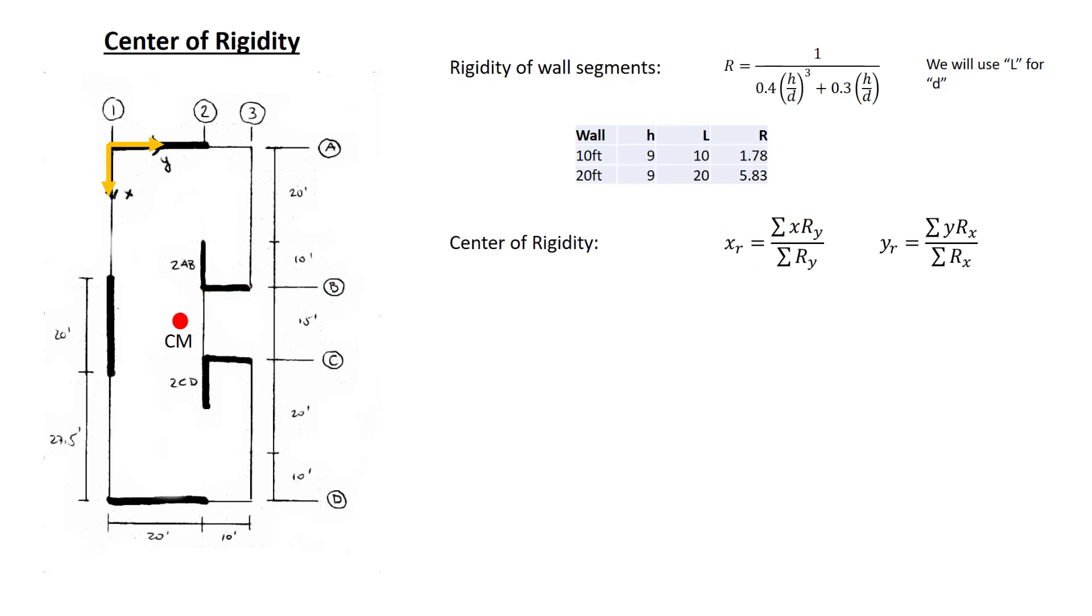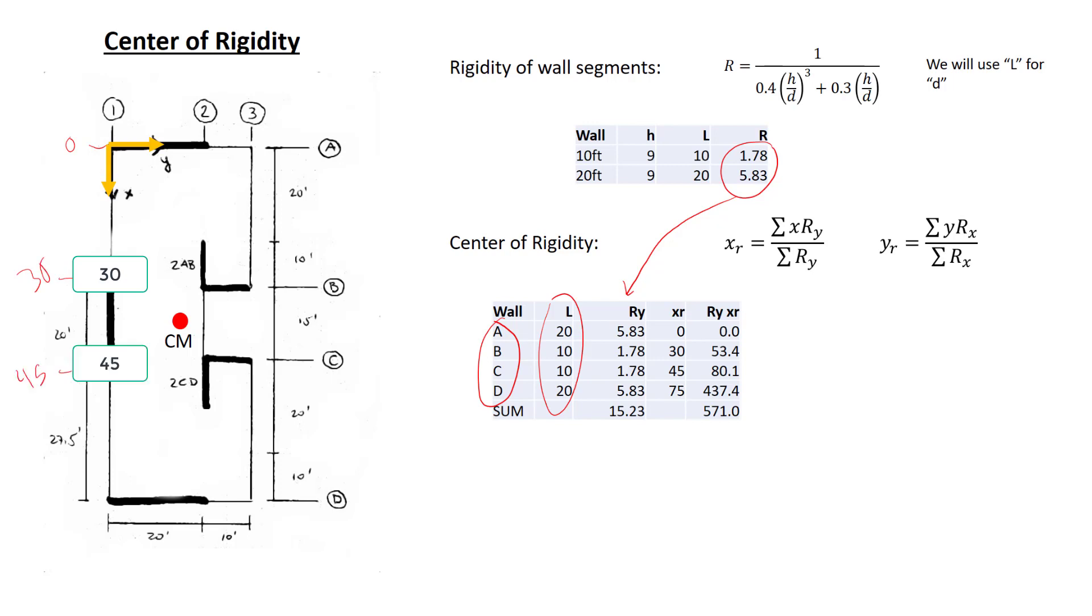Let's now calculate the location of the center of rigidity. First we'll look at the center of rigidity in the x direction. So the walls that are relevant here are the walls that are oriented in the y direction or walls A, B, C, and D. I listed the lengths here solely for the purpose of being able to identify which of the values of rigidity is applicable to each wall. We now list the location of the wall in the x direction. So wall A is at x equals 0, wall B is at x is equal to 30, wall C is at x is equal to 45, and wall D is at x is equal to 75. So we list these right here.